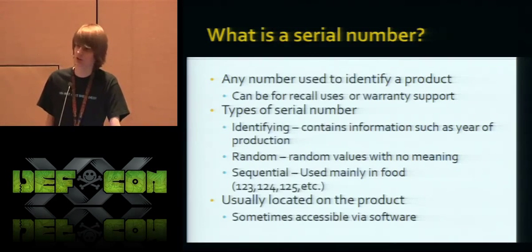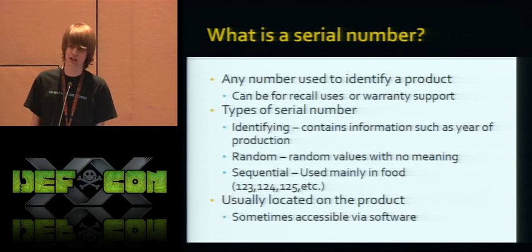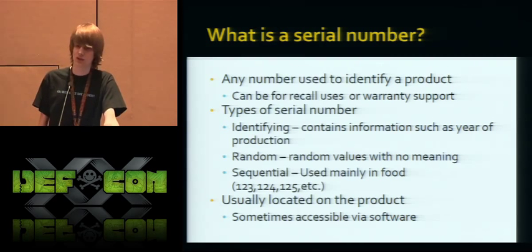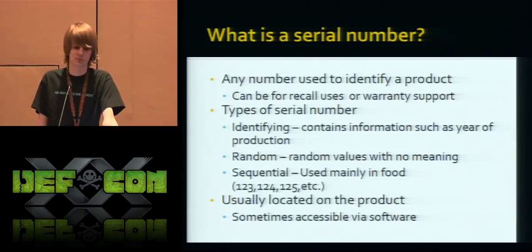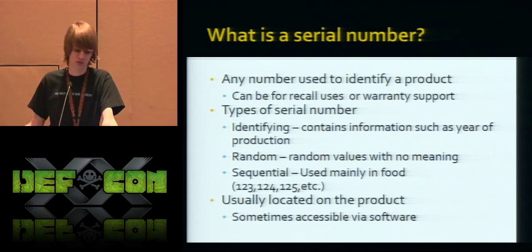What is a serial number? A serial number is used to identify a product. If you have the serial number, you're basically considered the owner of the product. There are different types: the identifying type, which might contain '2012' indicating it was made in 2012; the random type — someone came up with the idea of just using random numbers; and sequential, which is used in food so you can track production — one, two, three, you know what sequential is.